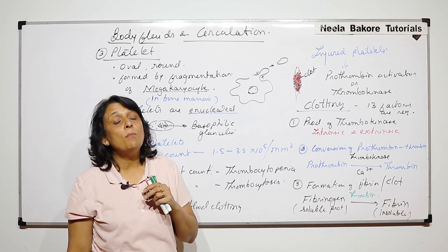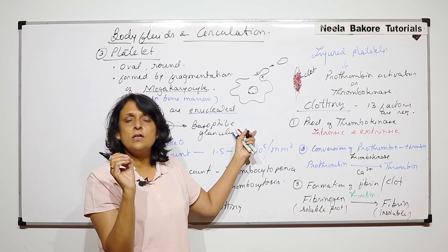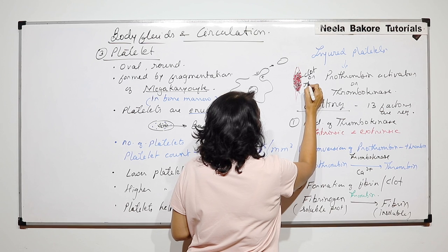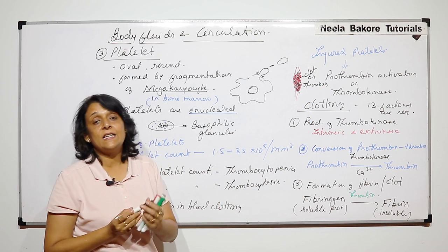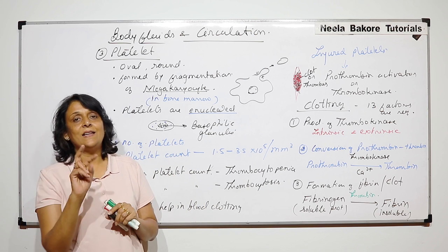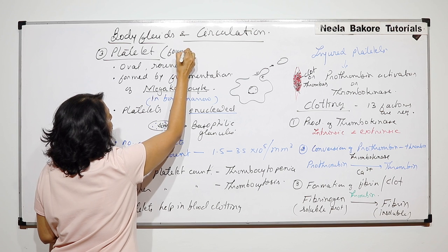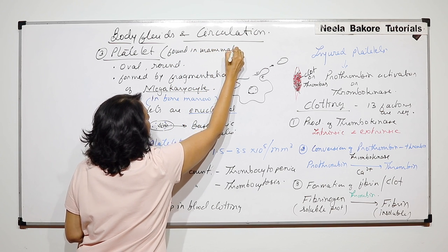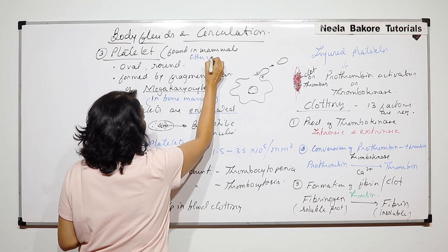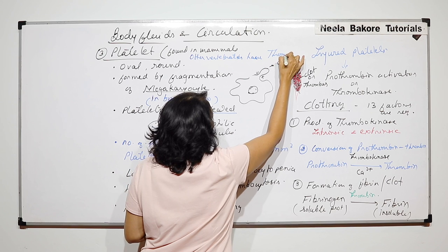We call this structure a clot or thrombus. However, a thrombus can move from one place to another. In other vertebrates, the clotting cells are called thrombocytes.